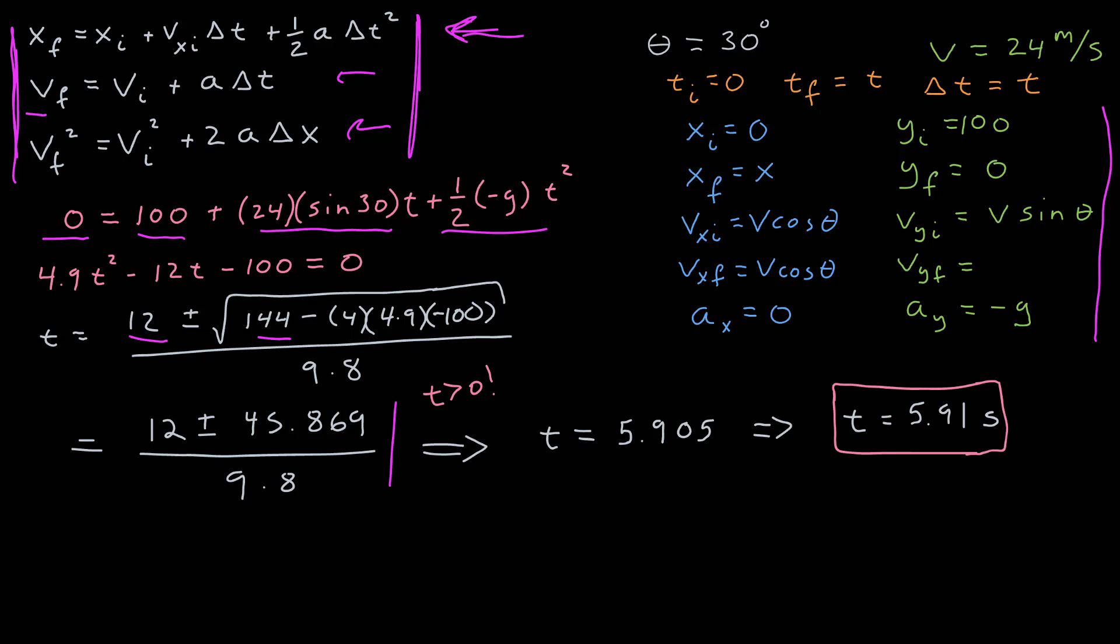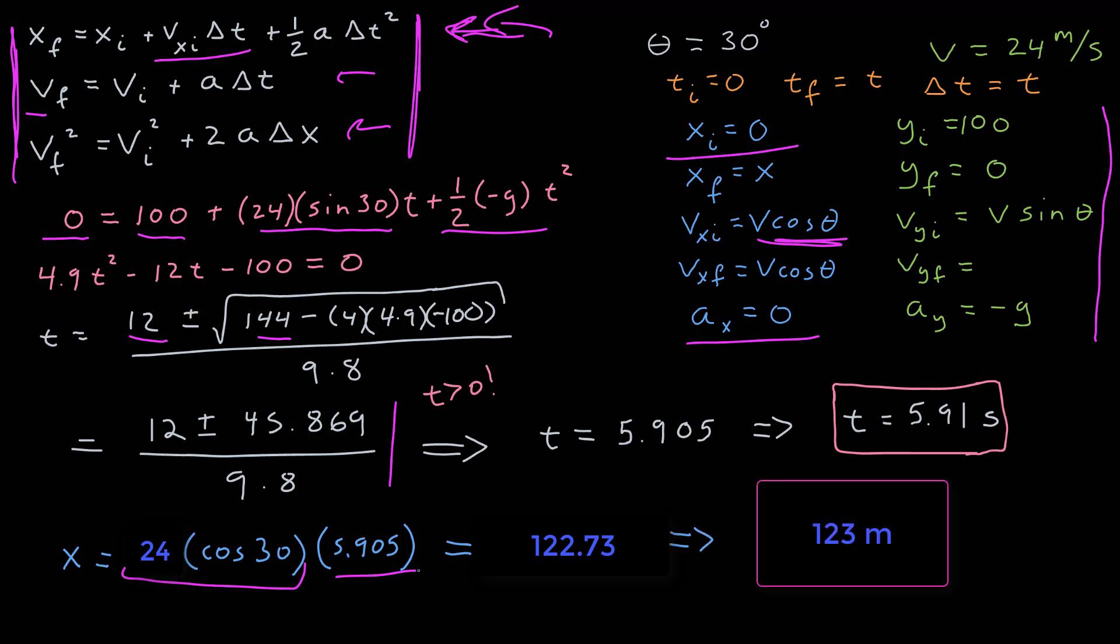So finally, I need to know how far it went, and that means what was its final x coordinate. And it seems pretty easy to use this equation again for the x coordinate, since the acceleration in the x direction is zero. The initial x coordinate is zero, so the final x position is simply the x component of the velocity times the time interval. The x component of the velocity is just v cosine theta, I showed here, times the time we just found. The result is 122.73 meters, or to three significant figures, 123.